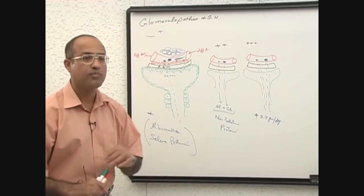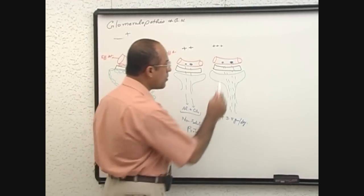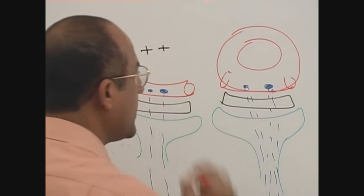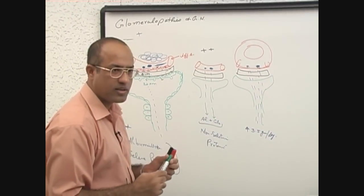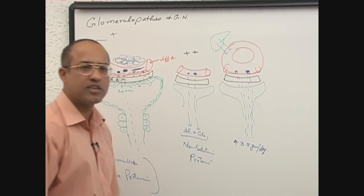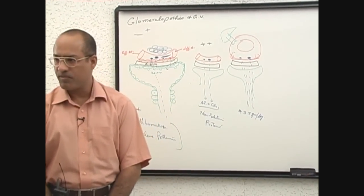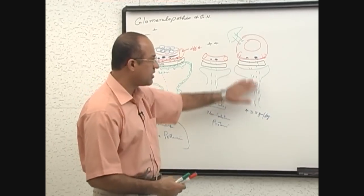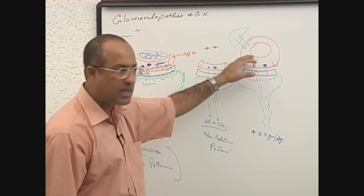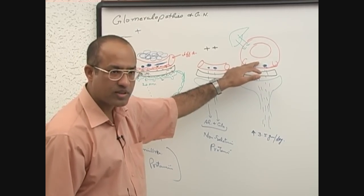Normally, when there is proteinuria and proteins are being lost into urine, it is the duty of the liver to compensate. The major source of plasma protein is the liver — hepatocytes are the synthetic machines. So as proteinuria increases, normally the liver increases its synthesis of proteins to compensate and maintain a reasonable level of plasma proteins in the blood.